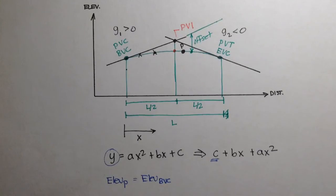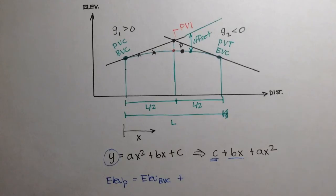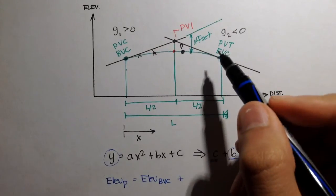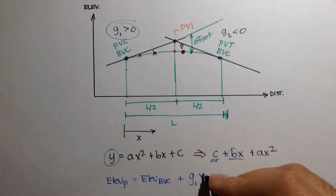All right, so it's elevation BVC. So our next term here would be bx. So b is actually the entering grade or grade 1. In our case, it's this grade, so grade 1 times x.